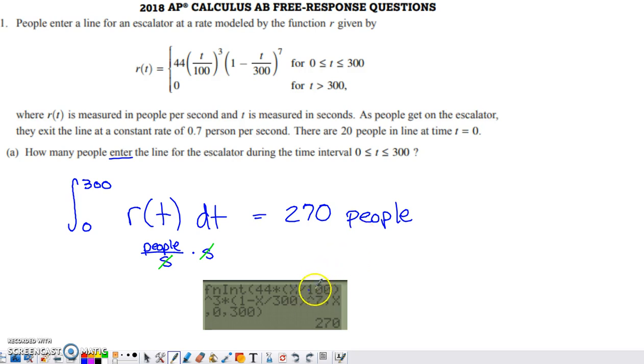It's a calculator problem. So you can use your calculator's capability to evaluate that definite integral. What you end up with is 270 people enter the line from time 0 to time 300.